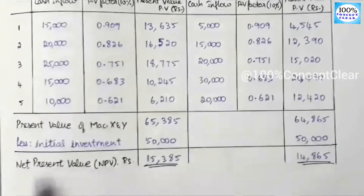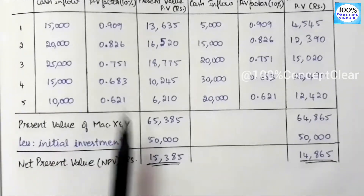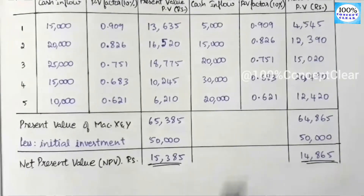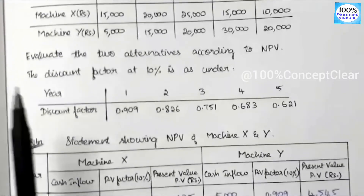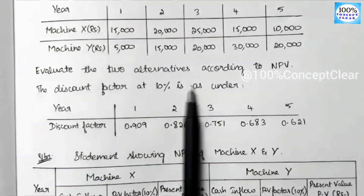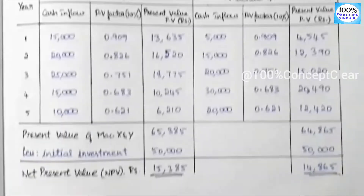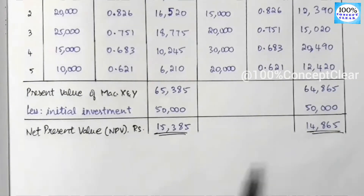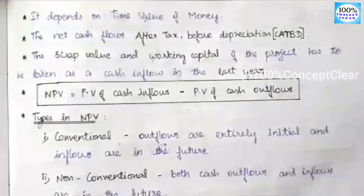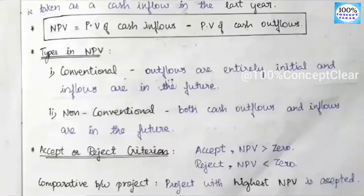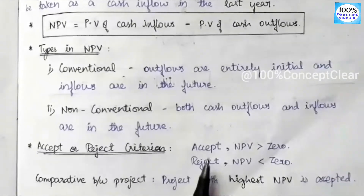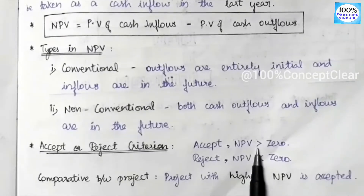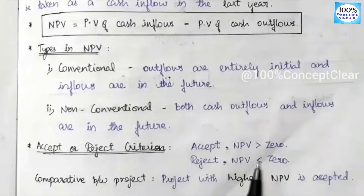These two values are the net present values. NPV of machine X is 15,385 and NPV of machine Y is 14,865. Now we evaluate the two alternatives. The decision criteria for NPV: if NPV is greater than 0, we accept; if NPV is less than 0, we reject.